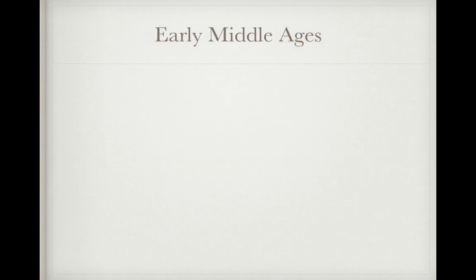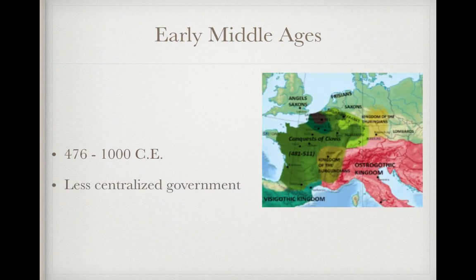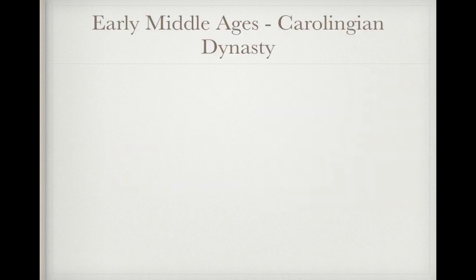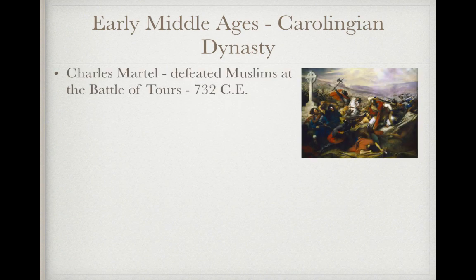The early Middle Ages occur from 476 to 1000 CE. A key characteristic is less centralized government — star and circle this bullet. Government was very decentralized, meaning central authority was not very powerful across long distances.